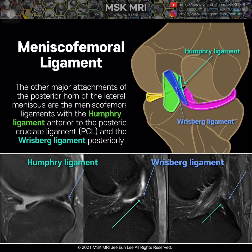Here on this image, meniscus femoral ligaments may mimic a peripheral longitudinal tear, but can be differentiated by following these structures on serial images.